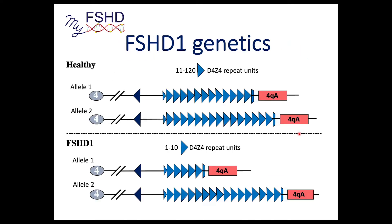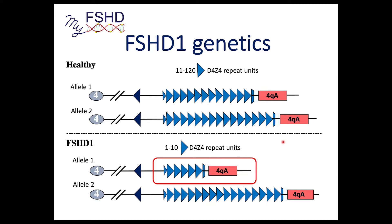Genetically, FSHD1 is caused by a contraction of the D4Z4 repeat on chromosome 4A. If you have between one and 10 D4Z4 repeat units combined with a 4QA subtelomere, you're genetically FSHD1. If you have more than 10 repeats, you are not genetically FSHD1.